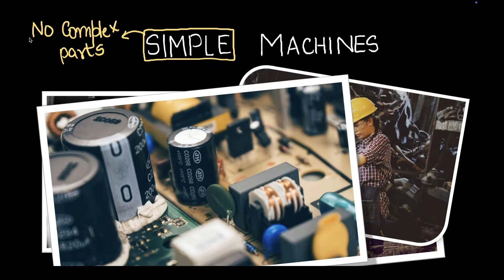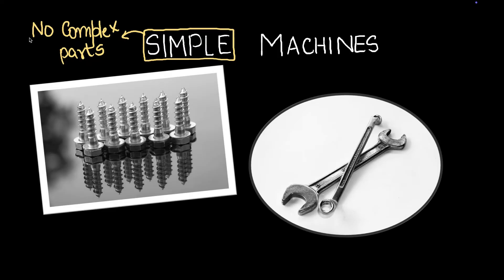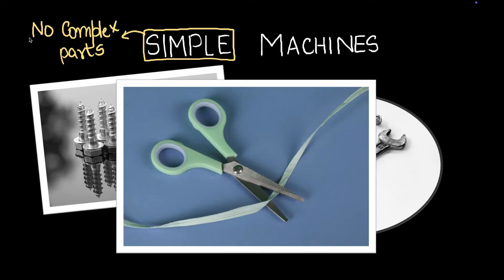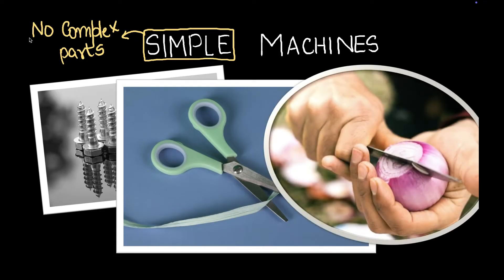And what are simple machines then? What are some examples? Well, a spanner - this is a simple machine - or maybe screws are simple machines. Even a pair of scissors is a simple machine, and even a knife is a simple machine. So let's define what simple machines are.